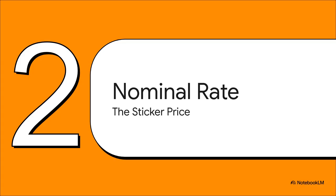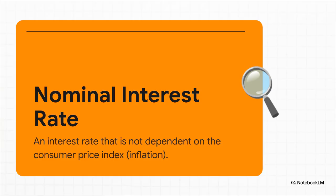First up, let's talk about the nominal interest rate. The best way to think about this is like the sticker price on a car — it's the simple advertised price you see right up front. No tricks, no hidden clauses. It's the number they tell you. A nominal interest rate is just a fixed rate; it's not tied to whatever's going on with inflation or the economy. If the bank says the rate is 5%, you pay 5%. It's a simple, predictable number that isn't going to change.